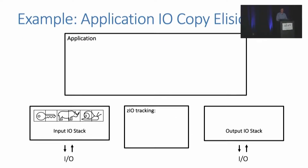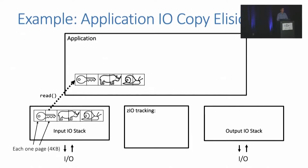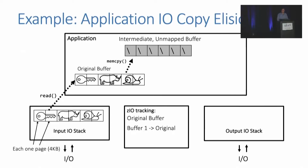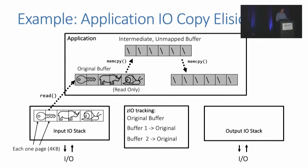Let's go through an example using a generic key-value store. We have data coming in on an input I/O stack in the form of a key and some value — each little box represents a page, so six pages is 24 kilobytes. When this data is read from the input I/O stack into the application, we put this information in our Zeo tracking as the original buffer location. If that original buffer is then copied to an intermediate location, instead of performing the copy, we can unmap the destination buffer and update our tracking. We also map the original buffer as read-only to prevent future modifications we can't track. If unmapped data buffers are again copied, we can continue to elide copies by unmapping and updating our tracking.